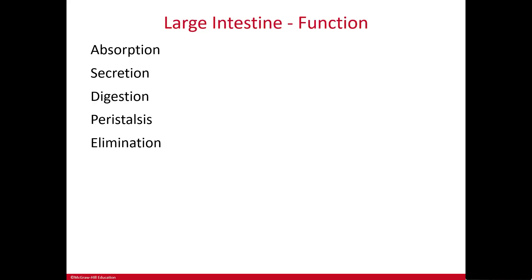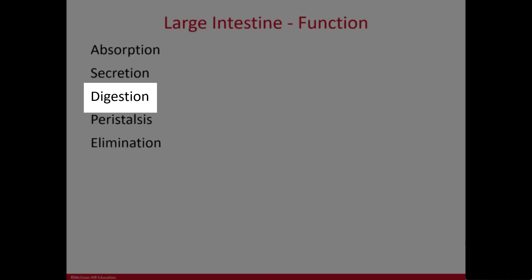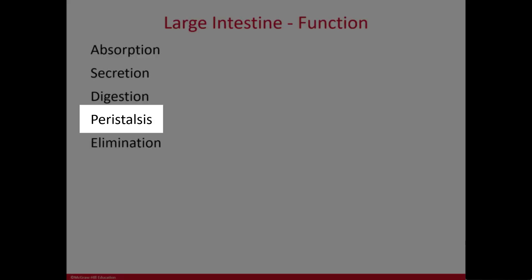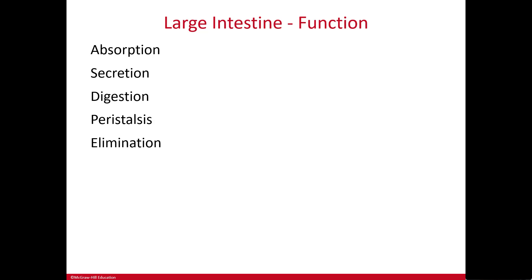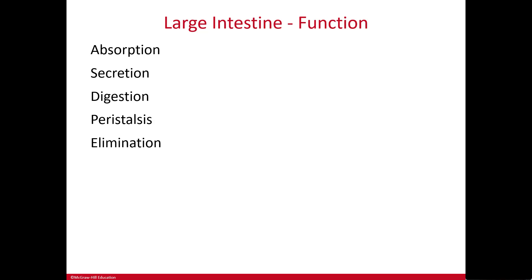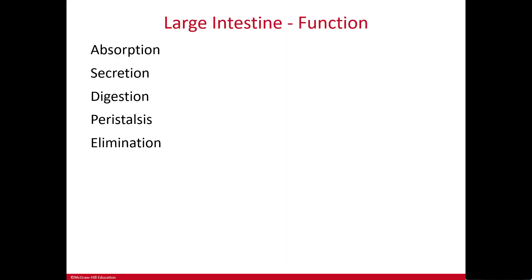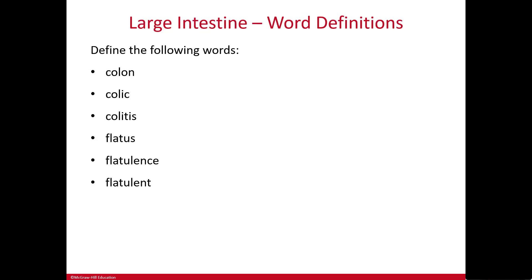Another function of the large intestine is secretion of mucus, which protects the intestinal wall and holds fecal particles together. There is some digestion by bacteria in the large intestine, though not as much as in the small intestine. Peristalsis — muscular contractions — does occur in the large intestine but less frequently. The gastrocolic reflex occurs when food is ingested into the stomach, generating mass movement of feces through the large intestine toward elimination.